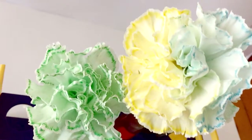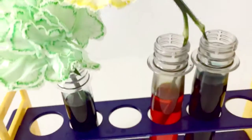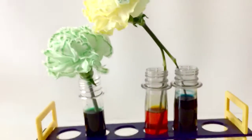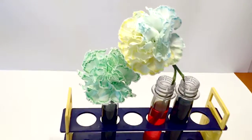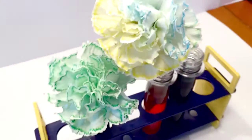A process called transpiration helps capillary action take place. Transpiration is when the water from the leaves and the flower petals evaporates, or in other words, the water leaves the plant and goes directly to the surrounding air. As the water evaporates, the plant pulls up and sucks up more water.